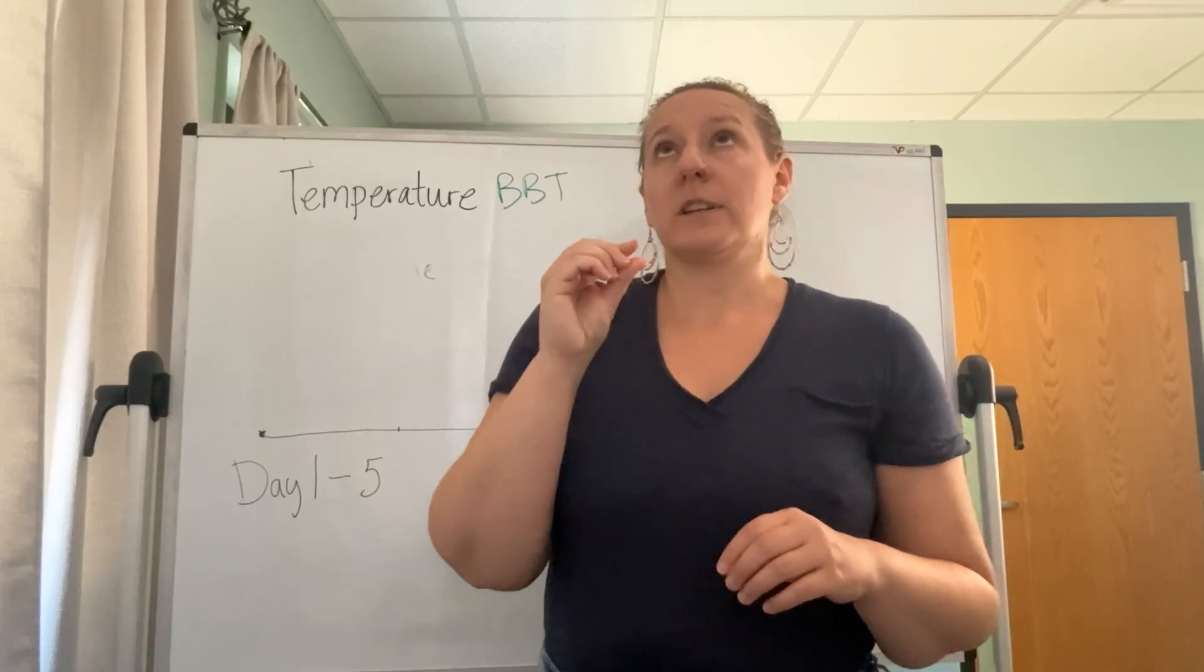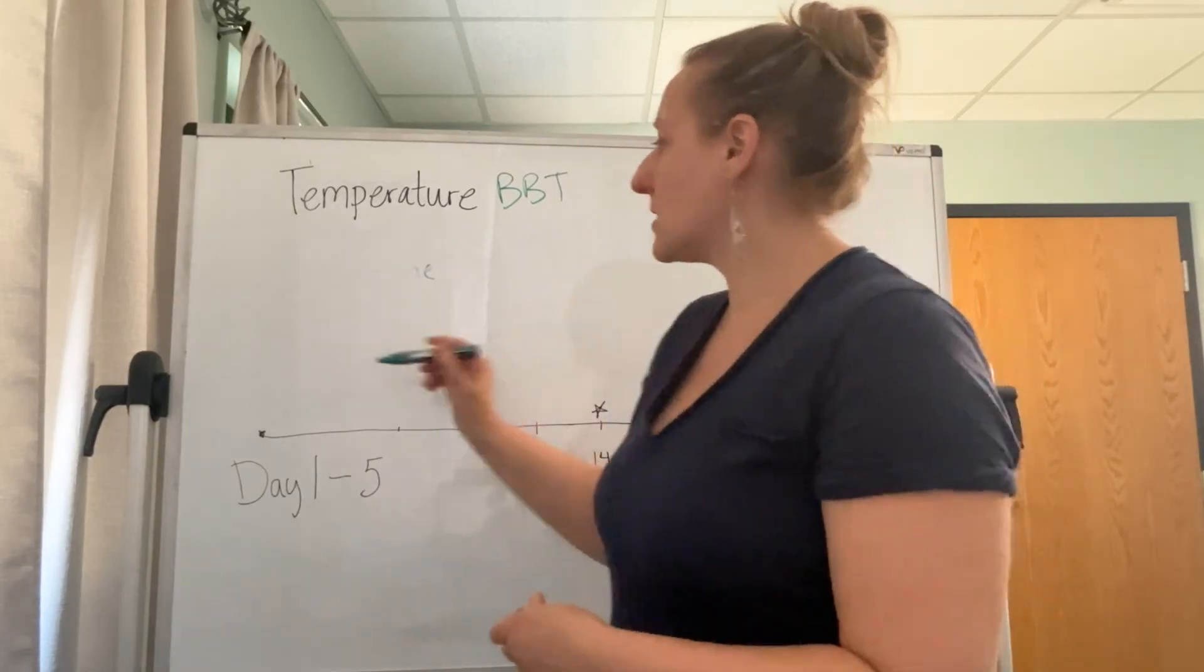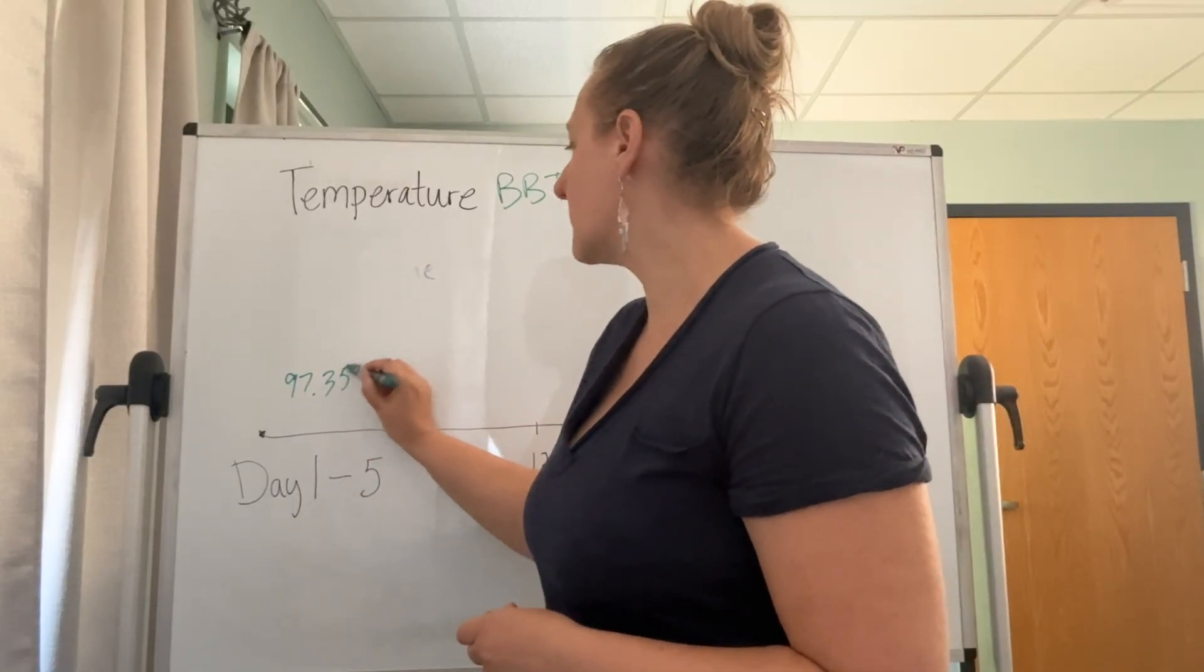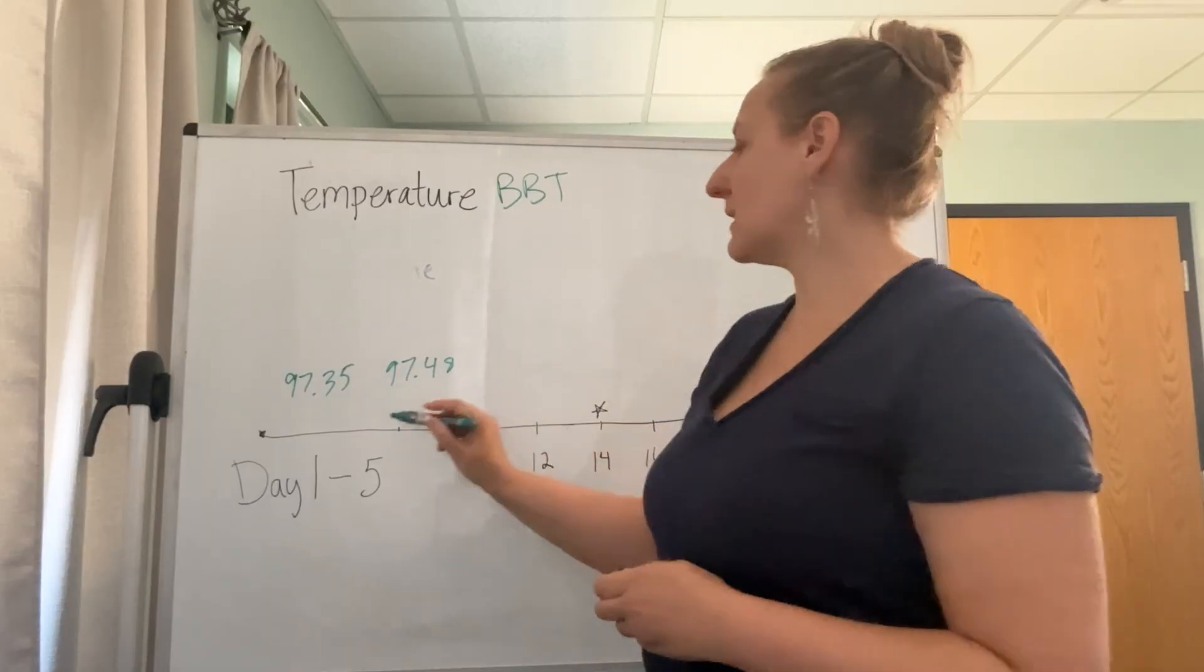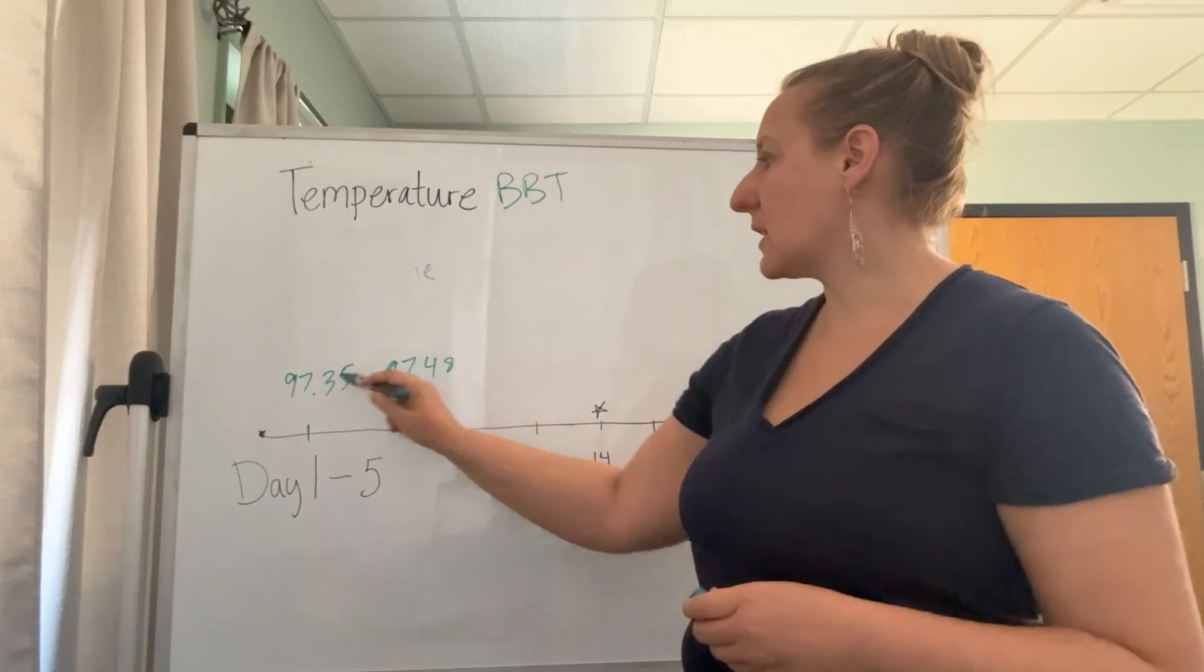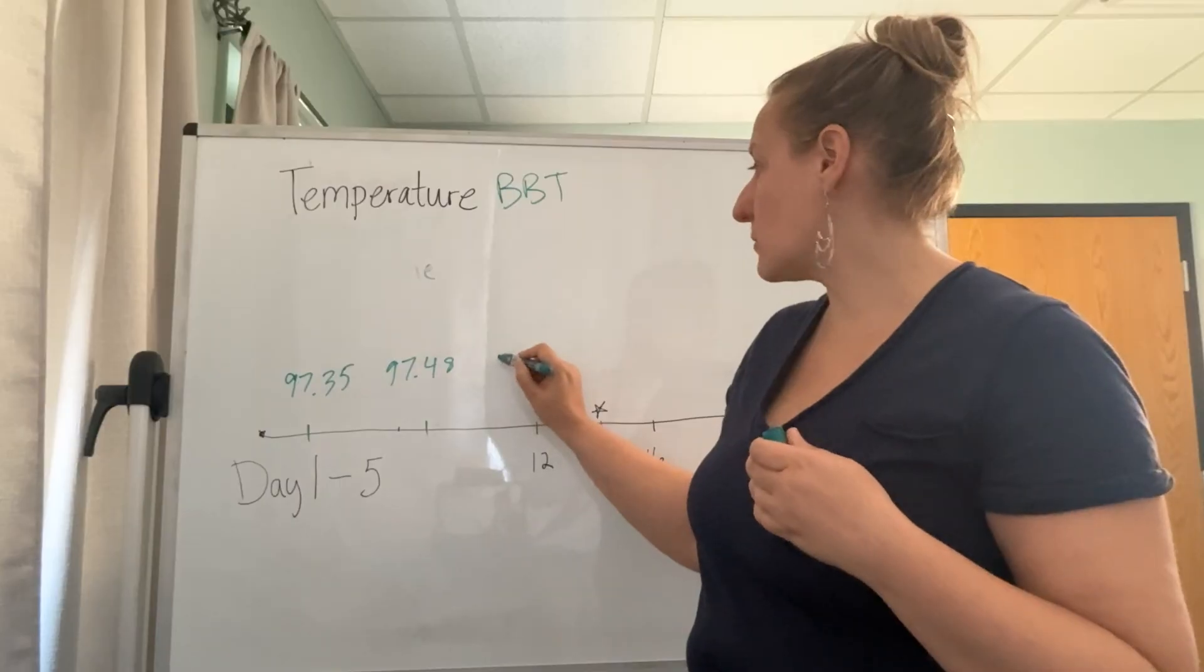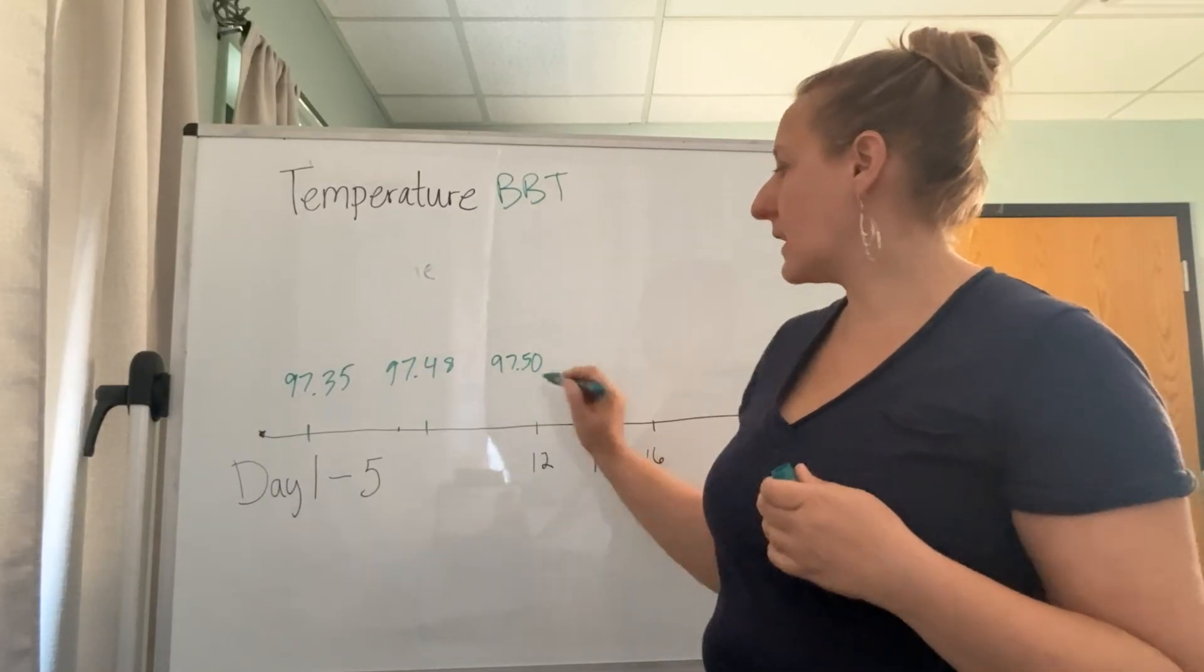For example, in the first half of your cycle when you wake up in the morning, maybe your temperature is around 97.3. If I'm taking my temperature on day two of my cycle and again on day eight, they're all going to be around this range, maybe like 97.5, so pretty similar.